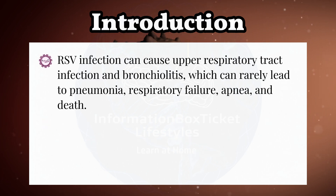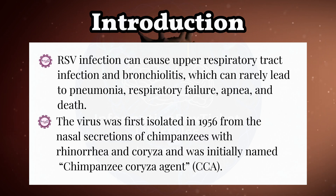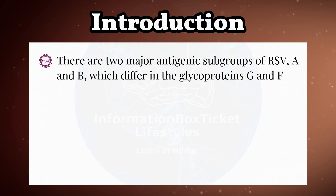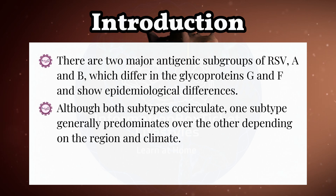RSV infection can cause upper respiratory tract infection and bronchiolitis, which can rarely lead to pneumonia, respiratory failure, apnea, and death. The virus was first isolated in 1956 from the nasal secretions of chimpanzees with rhinorrhea and coryza, and was initially named Chimpanzee Coryza Agent (CCA). There are two major antigenic subgroups of RSV, A and B, which differ in the glycoproteins G and F and show epidemiological differences. Although both subtypes co-circulate, one subtype generally predominates depending on the region and climate.